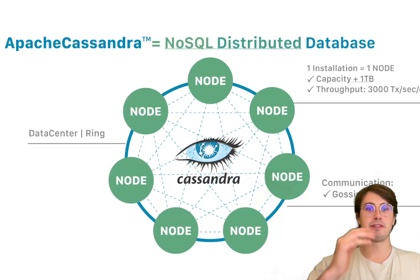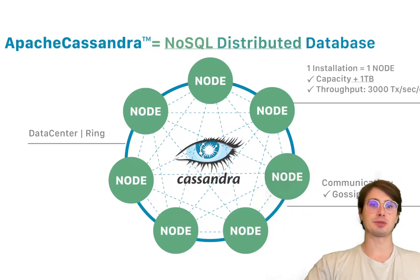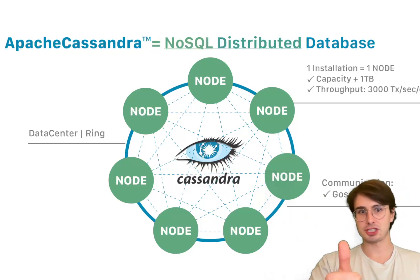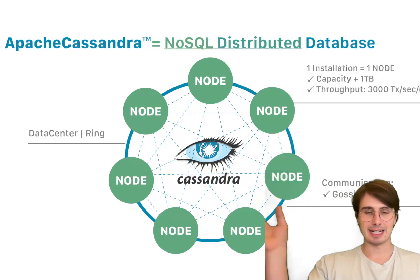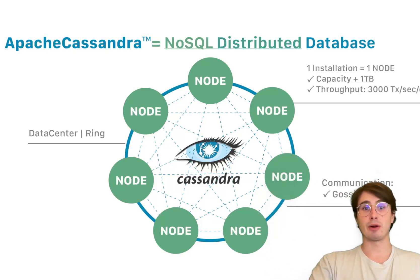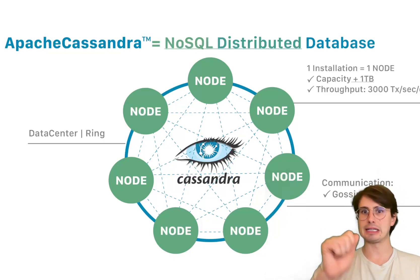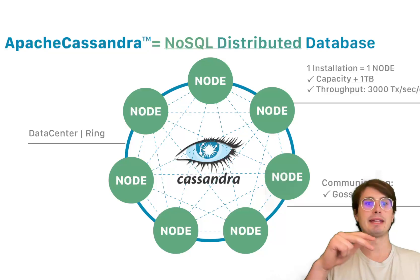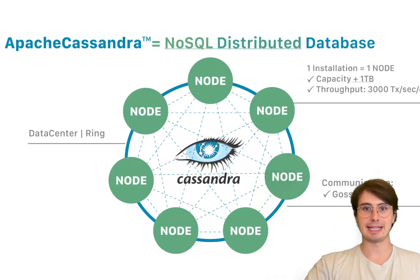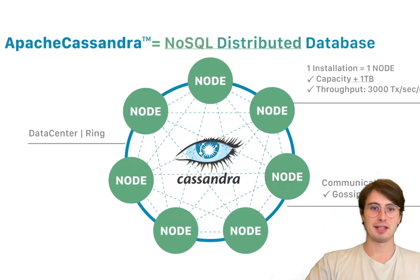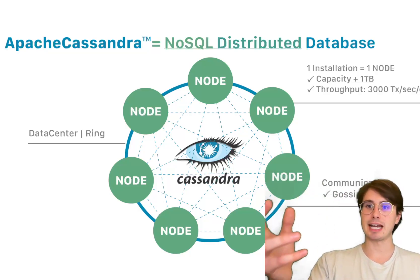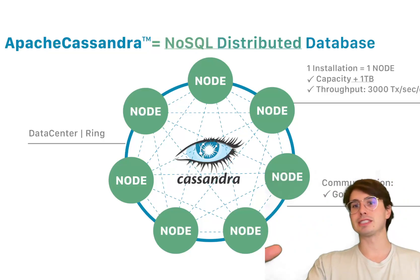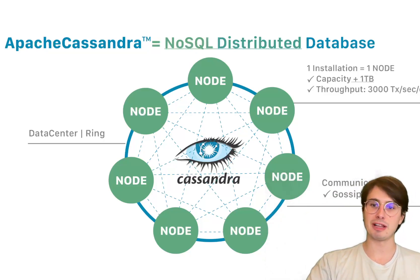Cassandra is best suited for large-scale distributed applications with massive data sets and a need for high availability. It also works great for use cases that prioritize write performance, such as time series data, logging, and IoT data collection. Finally, applications requiring multi-data-center support and fault tolerance are ideal. That's really all I have for today — I hope this breakdown of these three NoSQL database types and their different use cases has been helpful. Data Guy out.